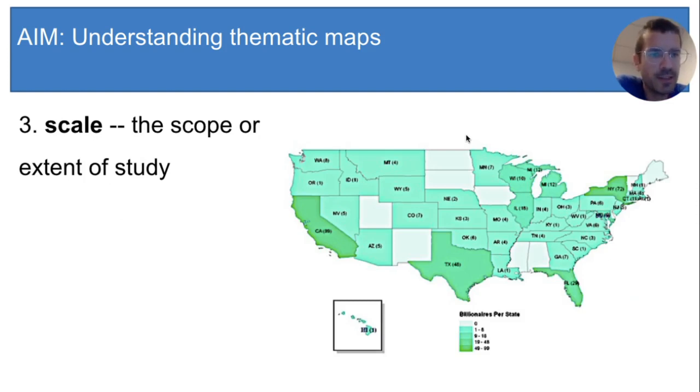Let's go back to this idea of scale for a second. Here's another chloropleth map, billionaires per state. Here we're looking at the same variable as the last map, the number of billionaires. But we've decreased the scale and changed the predefined area from country to state.